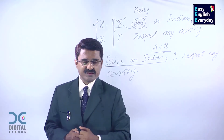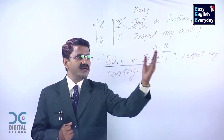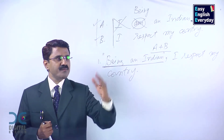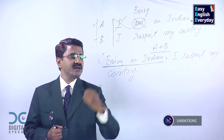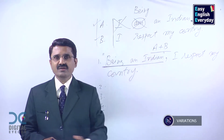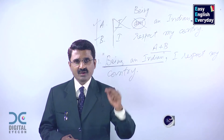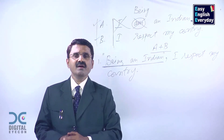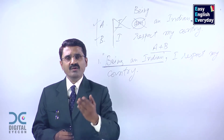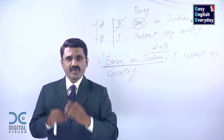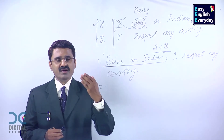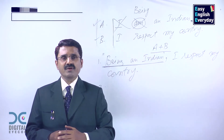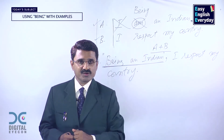Now what else can we do with this? The first part — 'being an Indian' — stays the same, and the second part is open for all changes. Being an Indian, I respect my country. Being an Indian, I don't respect my country. Being an Indian, do you respect your country? Being an Indian, don't you respect your country? Being an Indian, why do you respect some other country? Being an Indian, why don't you respect your country? Like this you can make positive form, negative form, auxiliary questions, and WH questions.